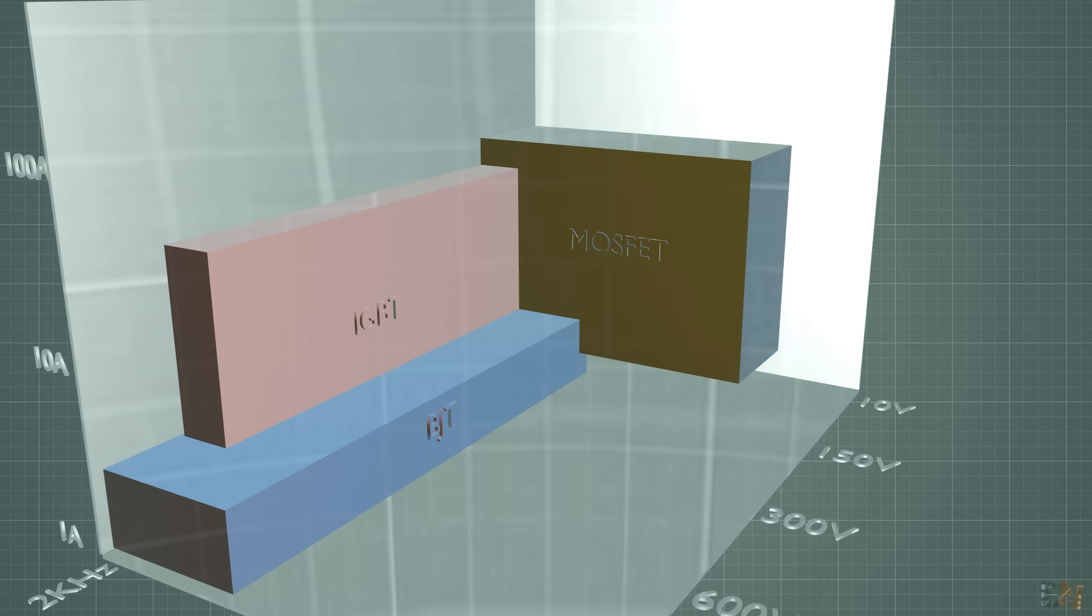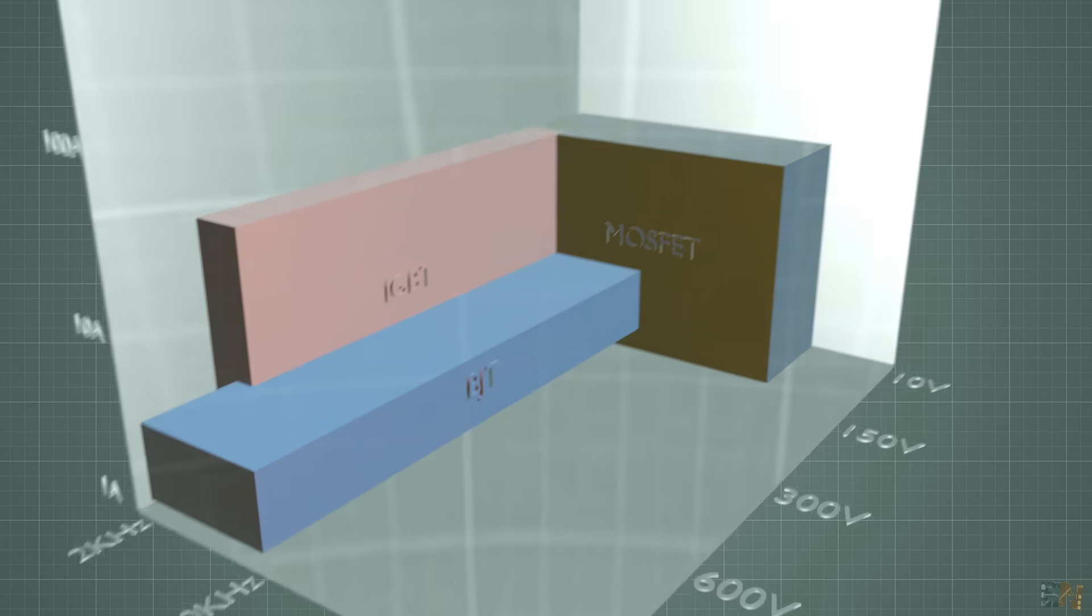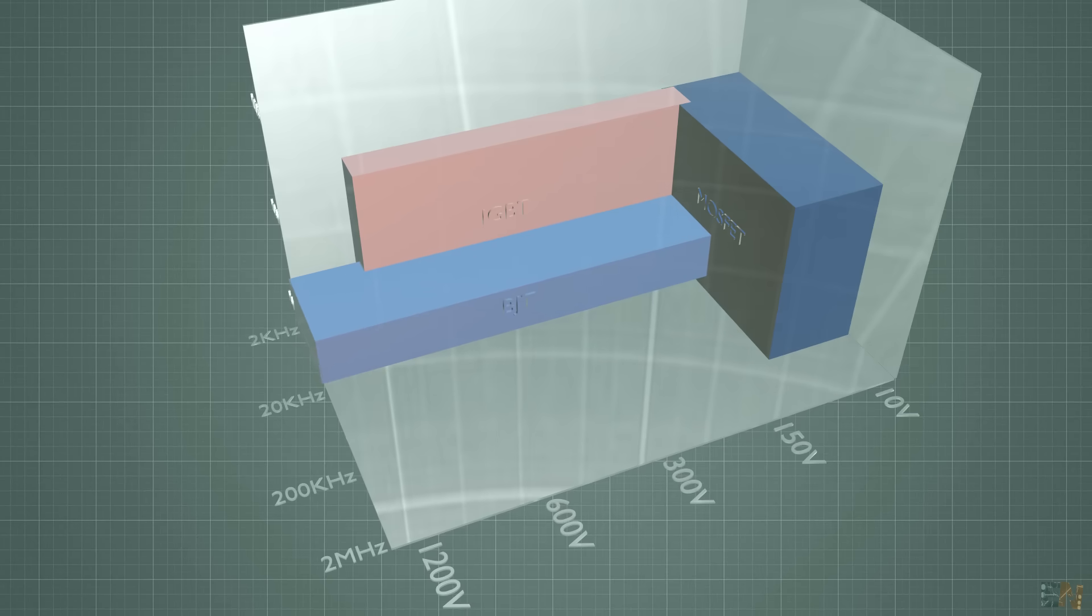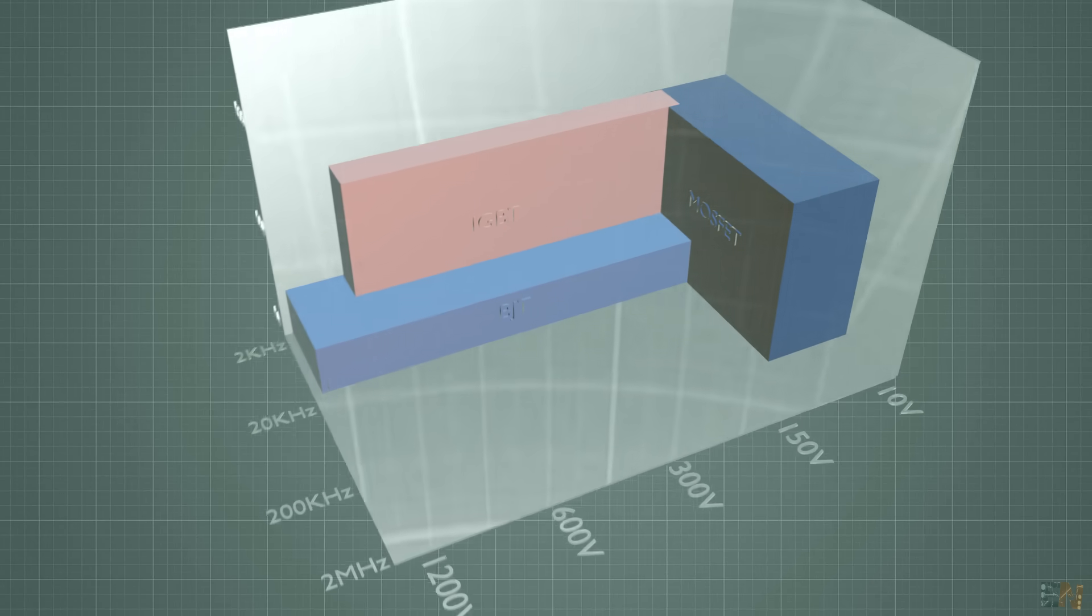As you can see, MOSFET could reach high currents, but they will work at relatively low voltages. BJTs could handle higher voltages, but the current value is lower.